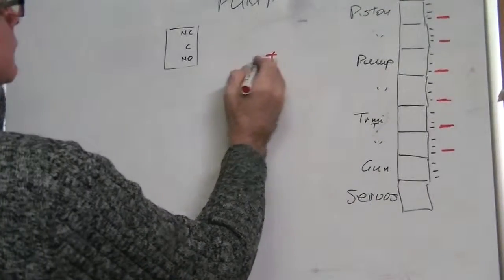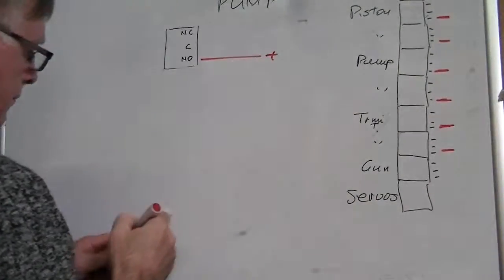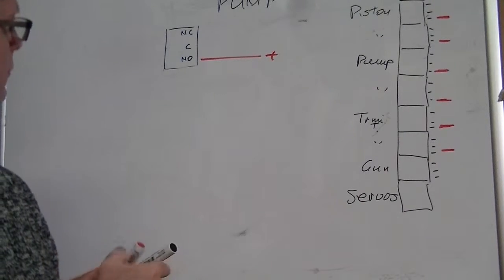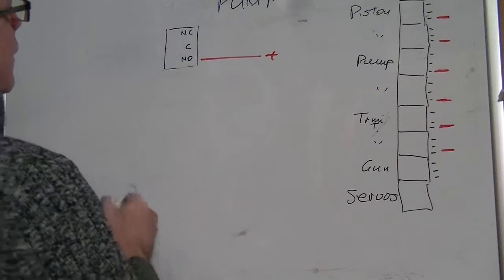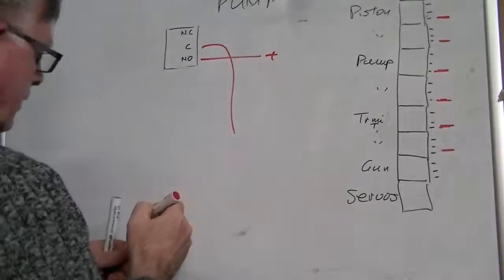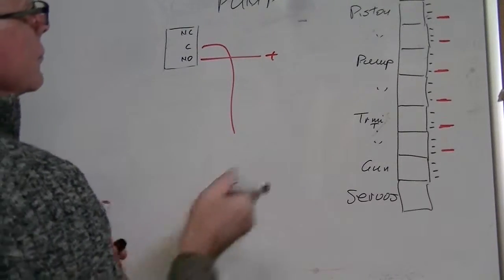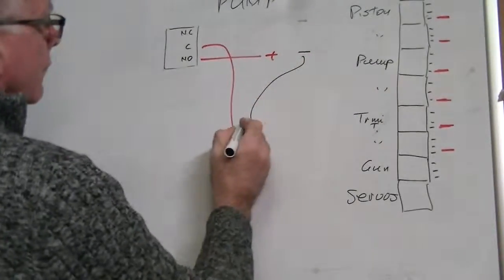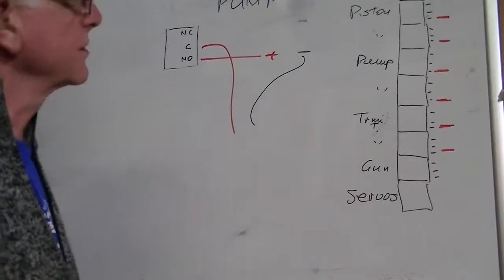And this is now just the gun. The positive goes to the normally open. The common goes to the gun. And the negative is from the common negative. So that's all fairly straightforward, I think.